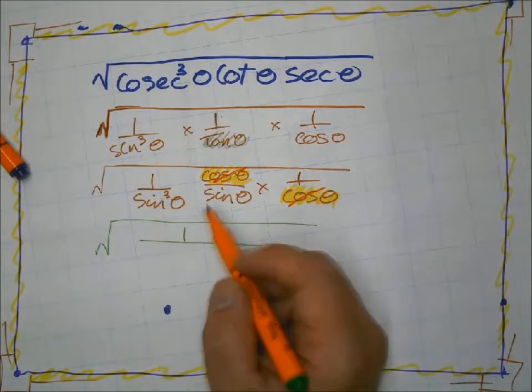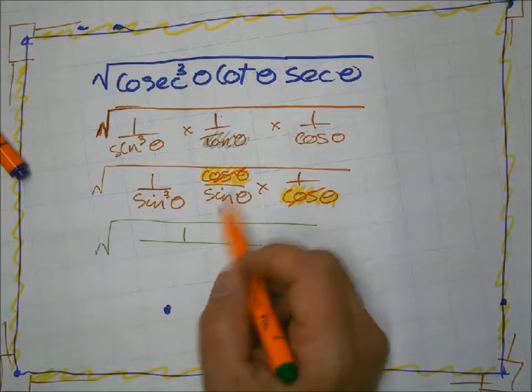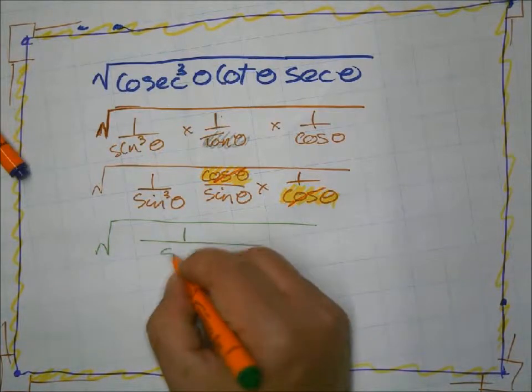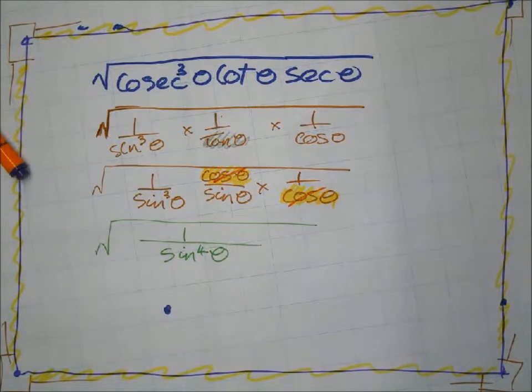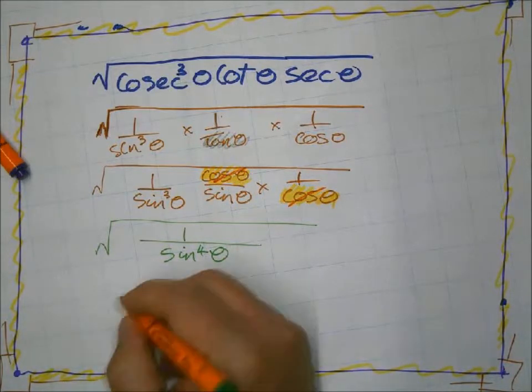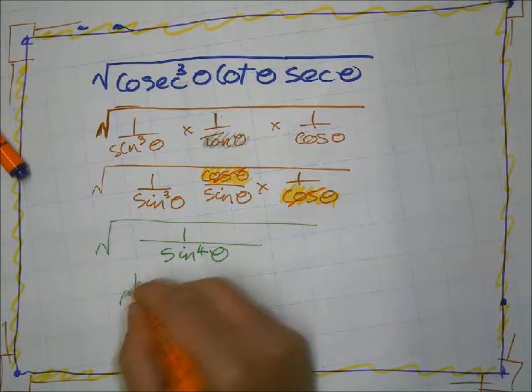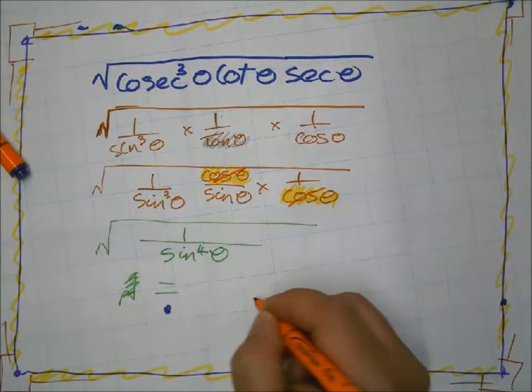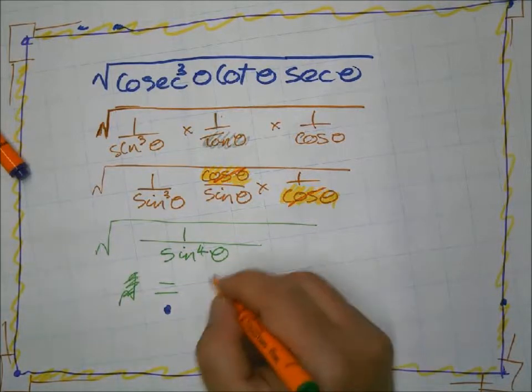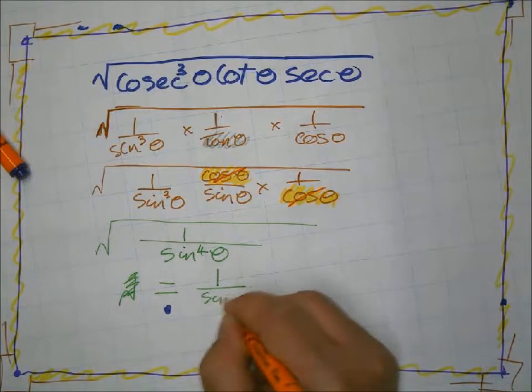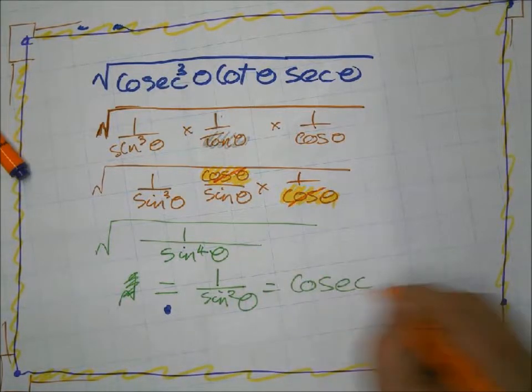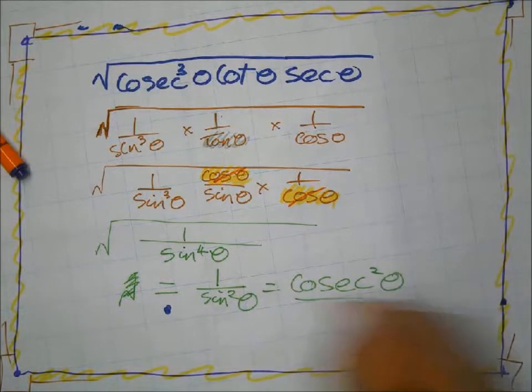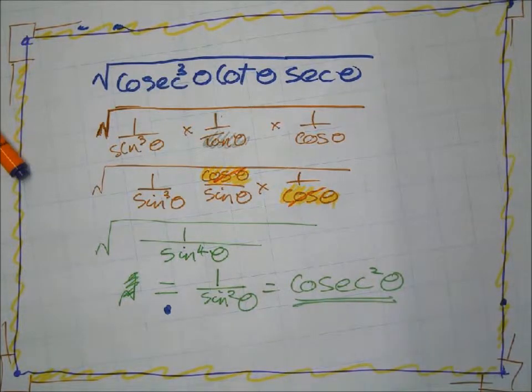So if they go, what are we going to end up with? One over sine cubed theta times one over sine theta is going to give us one over sine to the four theta. And now we can square root that, which is going to square root down to one over sine squared theta, which is going to be cosec squared theta. And there it is, panning out really quite nicely.